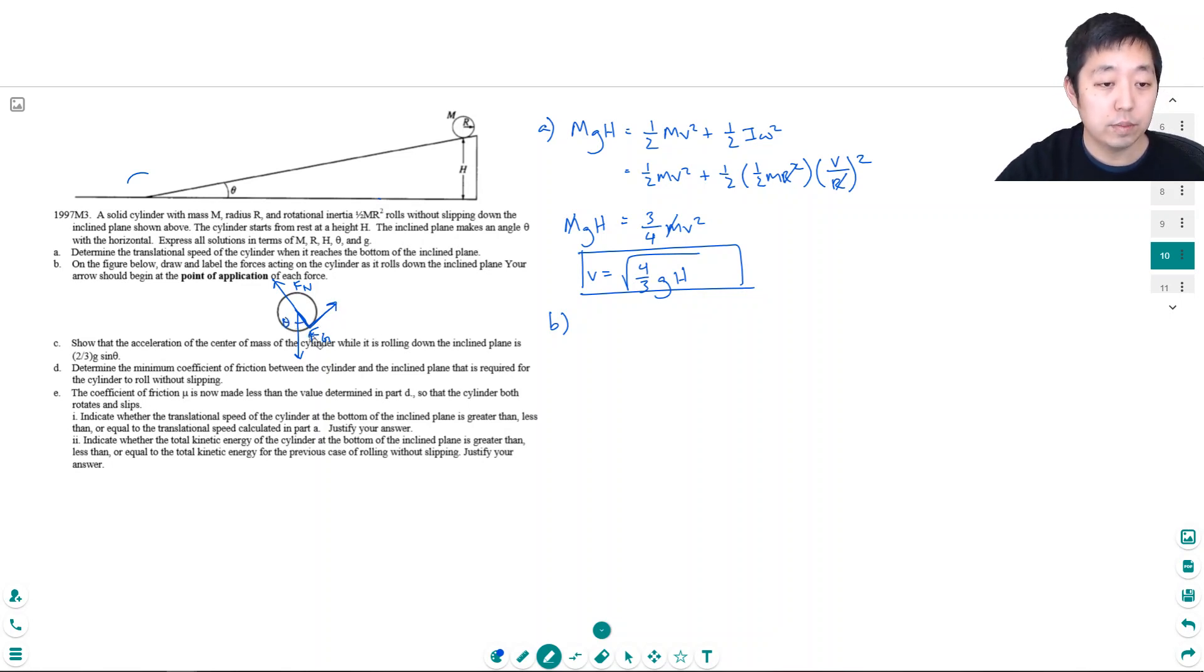Show that the acceleration of the center of mass of the cylinder while it's rolling down the inclined plane is two thirds g sine theta. We've done a lot of these problems in previous practice, but let's set it up again. I want to consider in the horizontal direction the net force equation. So if I say positive is going down the ramp, then my net force in the x direction is Fg sine theta minus force of friction. That has to equal ma.